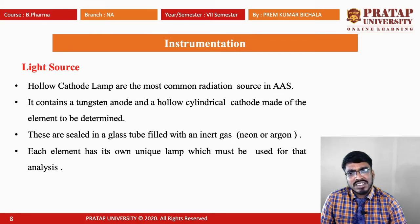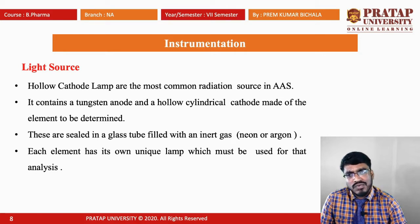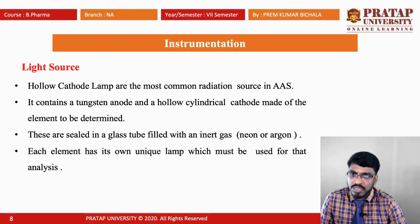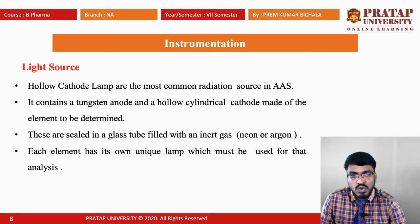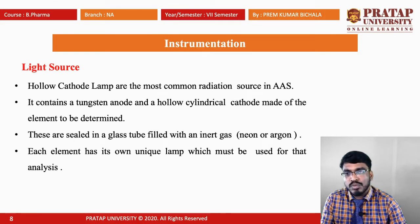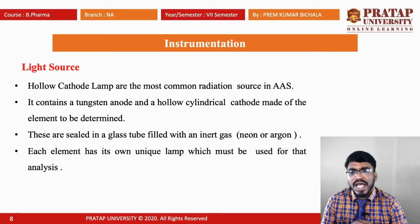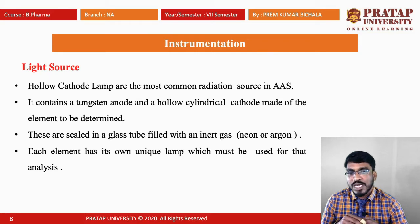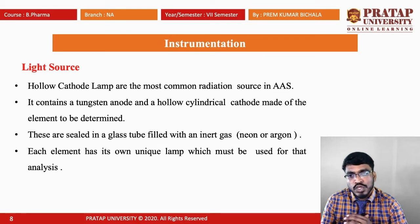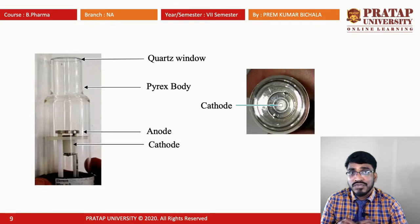The hollow cathode lamp contains a tungsten anode and a hollow cylindrical cathode made up of the element to be determined. The construction of the light source depends on the metal which we are going to determine. These are sealed in a glass tube filled with an inert gas — mostly neon or argon is preferable. Each element has its own unique lamp which must be used for that analysis. The cathode should be made up of the element we are going to determine. This is the construction of the hollow cathode lamp.